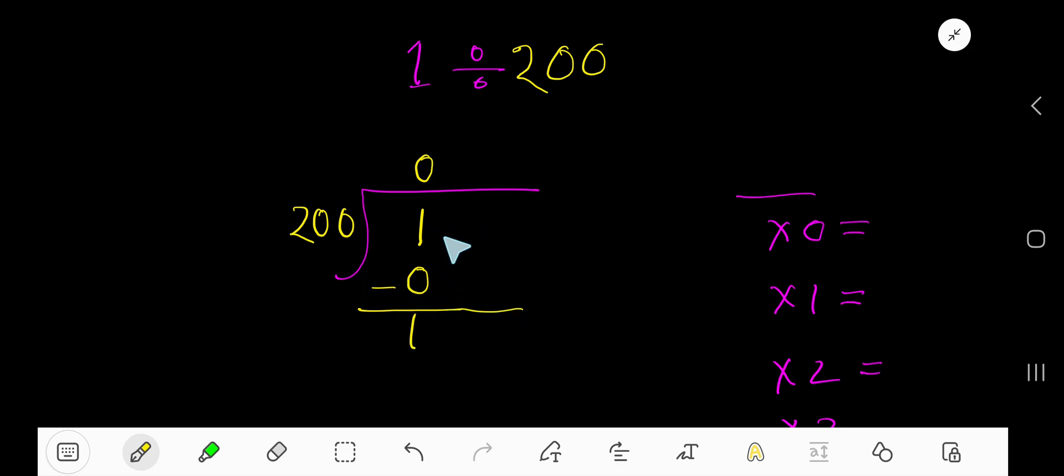To continue this process, take here a decimal and you are allowed to take any number of 0s. So bring down the first 0. Again you are getting 10 which is less than 200. 200 goes into 10 actually 0 times.